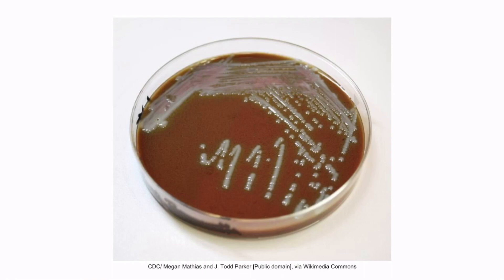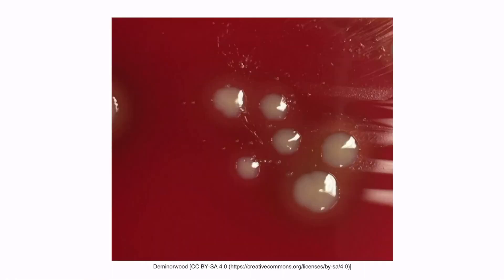Alternatively, H. flu can be grown on traditional blood agar next to hemolytic organisms, such as Staph aureus, because these organisms lyse the red blood cells, which provides factors V and X. This is an image of Staph aureus growing on blood agar. The large yellow-appearing blobs are colonies of Staph aureus. If you look closely, you can also see little satellite colonies surrounding Staph aureus, and these colonies are Haemophilus influenzae. So H. flu can be grown on blood agar next to hemolyzing organisms because the hemolyzing organisms lyse the red blood cells, which can then supply H. flu with factors V and X.